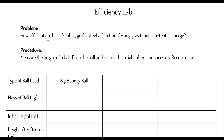So our problem: how efficient are balls in transferring the gravitational potential energy? When they start from a particular height and you drop them and they bounce back up, they're not going to bounce back up to their previous height. It's going to be some different height, and we want to know how much energy was retained in the final gravitational potential energy.